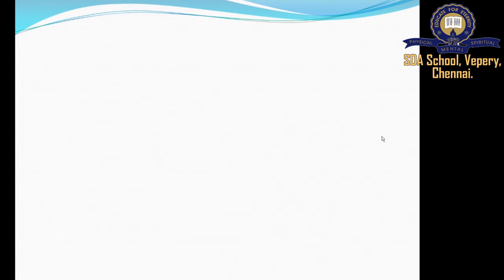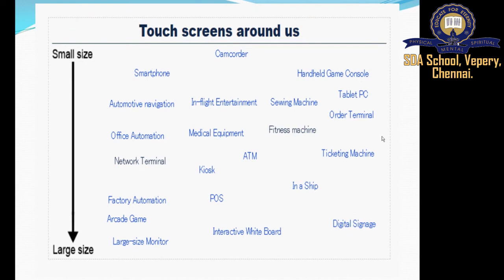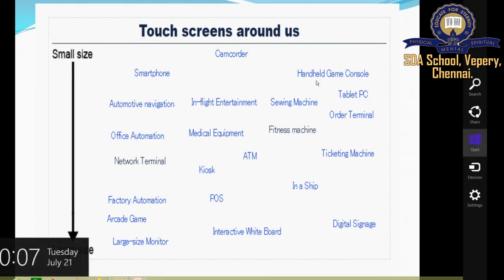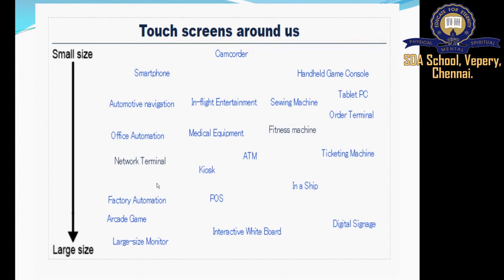Touch screens are available around us in many sizes — from small to large. These include smartphones, tablets, office automation terminals, network terminals, ATMs, ticketing machines, fitness machines, factory automation systems, and in large sizes, interactive whiteboards.